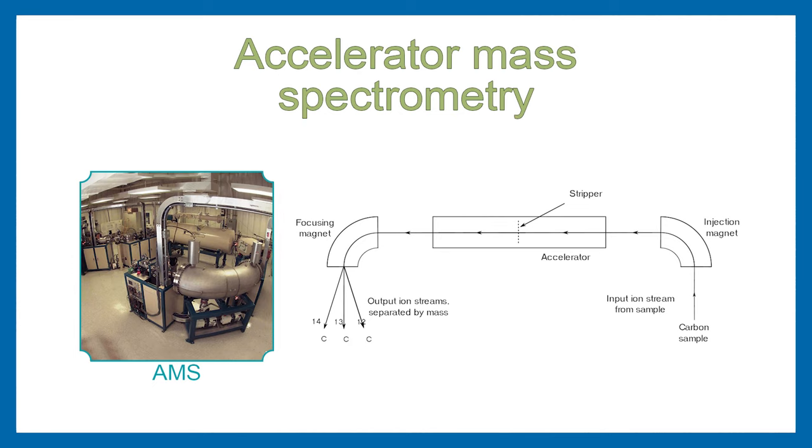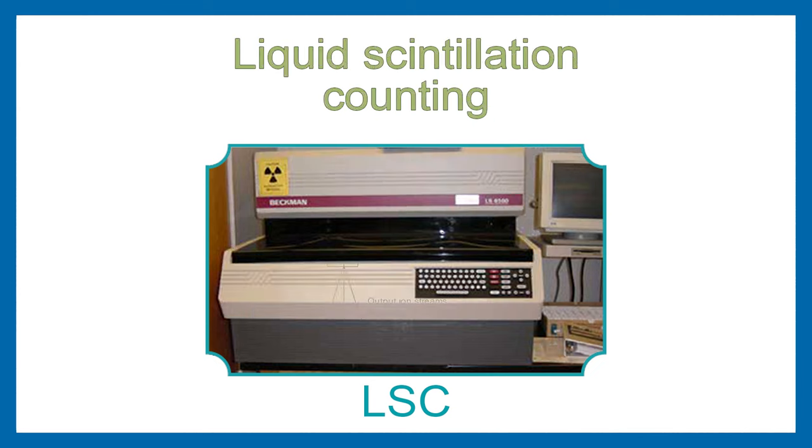The AMS produces a negatively charged ion beam, which goes into various highly selective filters to find C-14 atoms. While the other methods count beta particles, the mass spectrometry counts every carbon atom in the sample, comparing the amount of radiocarbon to C-12 and C-13.